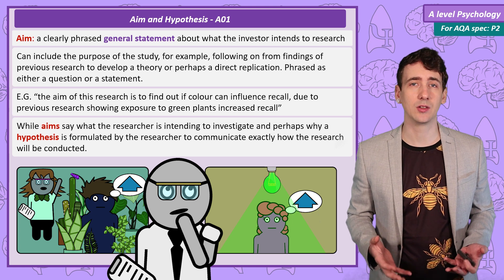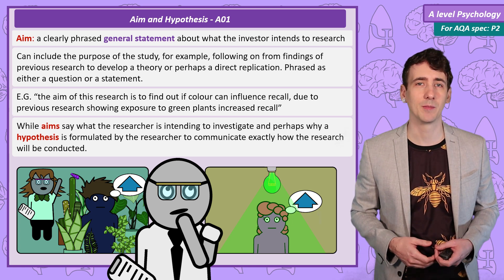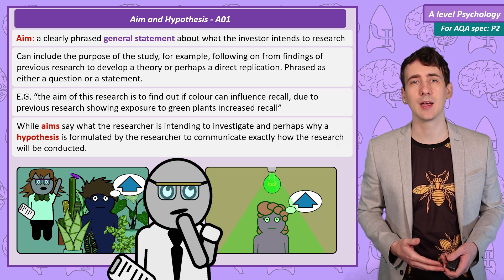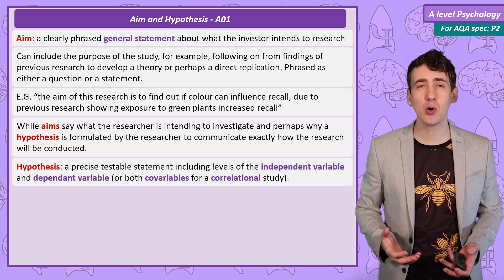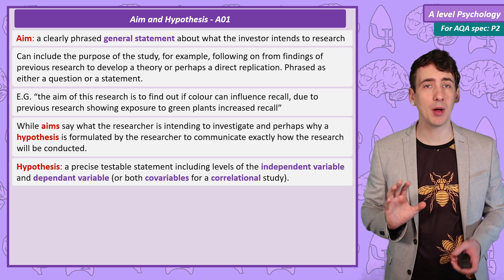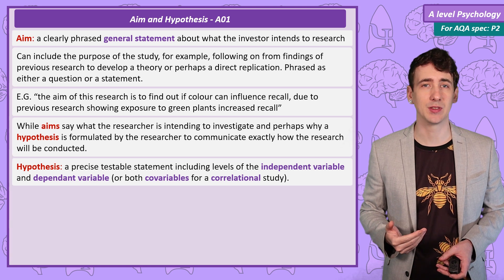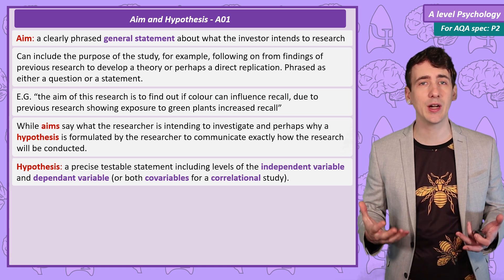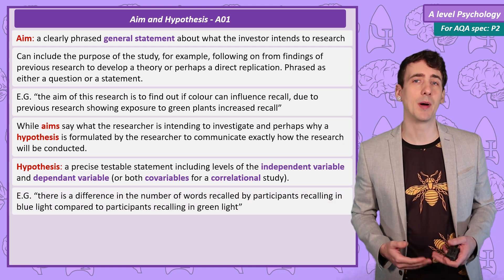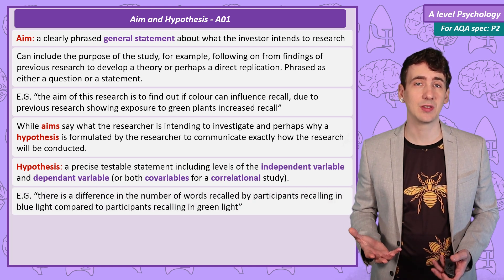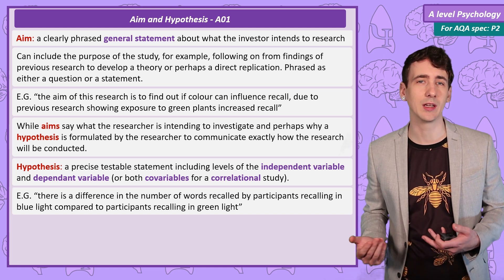We need to be more precise if we're going to conduct a study, and importantly communicate to other researchers exactly what we're doing. So after our aim we're going to make or formulate a hypothesis. A hypothesis is a precise statement that importantly can be tested. This means I need to state how the parts of the study interact. So in an experiment I would state in my hypothesis exactly what the levels of the independent variables are and what the dependent variable is. In this example, my hypothesis is: there is a difference in the number of words recalled by participants recalling in blue light compared to participants recalling in green light.